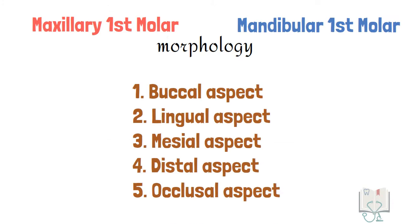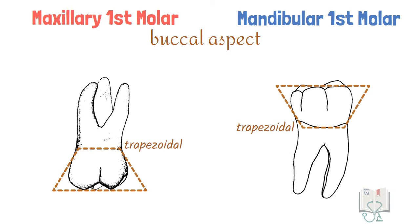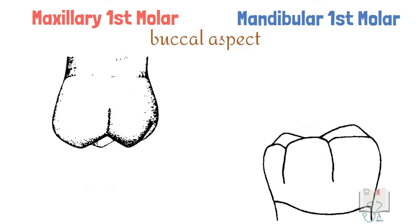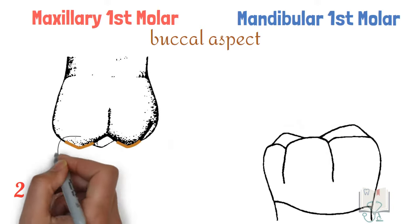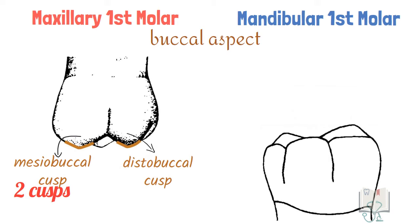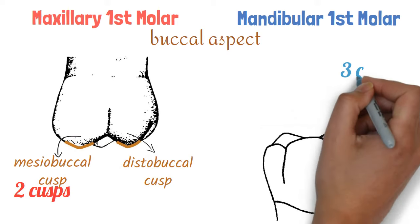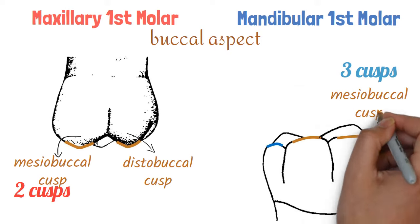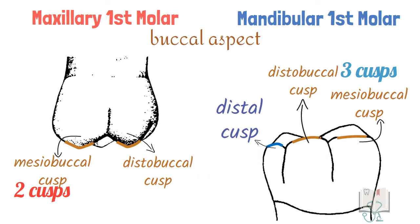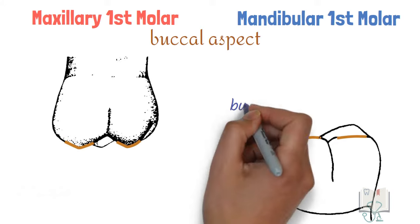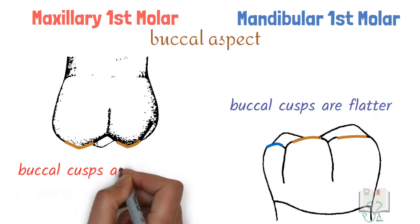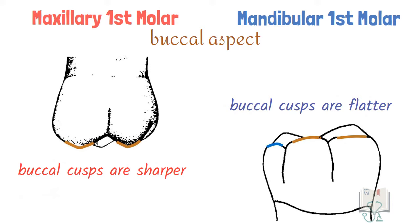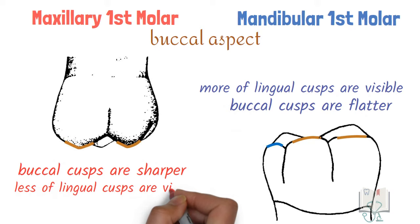Now let us study the differences in their morphology in detail, starting with the buccal aspect. In both molars, the outline form of the crown is trapezoidal in shape. From the buccal aspect, in maxillary first molar two cusps are in front — mesiobuccal cusp and distobuccal cusp — whereas in mandibular first molar three cusps are in front: mesiobuccal cusp, distobuccal cusp, and distal cusp. Moreover, the buccal cusps in mandibular first molar are flatter than those in maxillary first molar, because of which more of the lingual cusps are visible in mandibular first molar than in maxillary first molar.